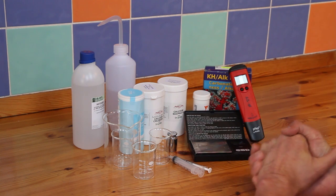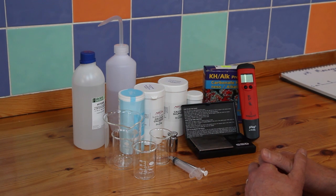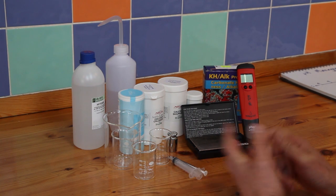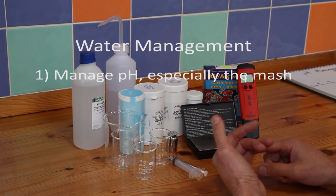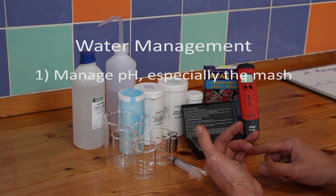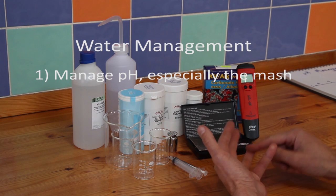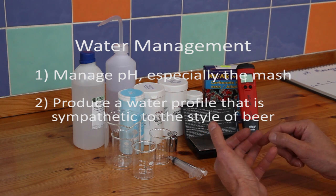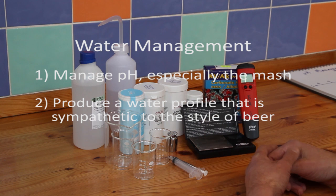OK, so those caveats are outstanding, let's get started then. So what are we trying to achieve with water management? Well, as I see it, there are two things that we are trying to achieve. The first is to manage pH, principally of the mash but really manage the pH of the whole production cycle from the tap water or source water through the mash right through to the finished product. And the second thing that we are trying to achieve with water management is to get to a water profile in the sense of the mineral content of the water which is sympathetic to the style of beer that we are trying to brew.